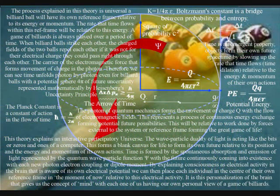When billiard balls strike each other, the charge fields of the two balls repel each other. If it was not for their electrical charge, they would pass right through each other. The carrier of the electromagnetic force that forms the movement of charge is the light photon of quantum mechanics.